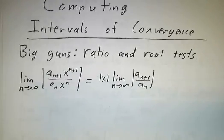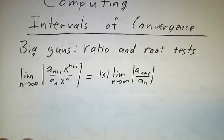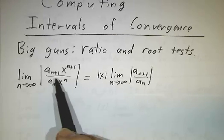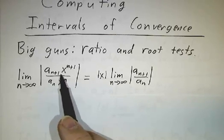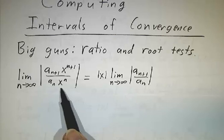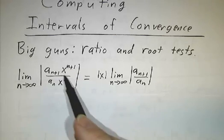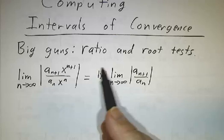The point is that if you apply the ratio test to a power series, you're taking the limit of a_n+1 x^{n+1} over a_n x^n. And all of the factors of x cancel except for one and that just pulls out.